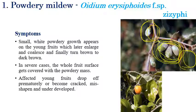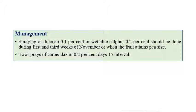The major symptom of powdery mildew is white color powdery growth appearing on berries as well as leaves. For management, spraying dinocap 0.1 percent or wettable sulfur 0.2 percent is recommended, especially during the first and third weeks of November when the fruit attains a pea size. Two sprays of carbendazim at the rate of 0.2 percent at 15-day intervals can minimize this disease.